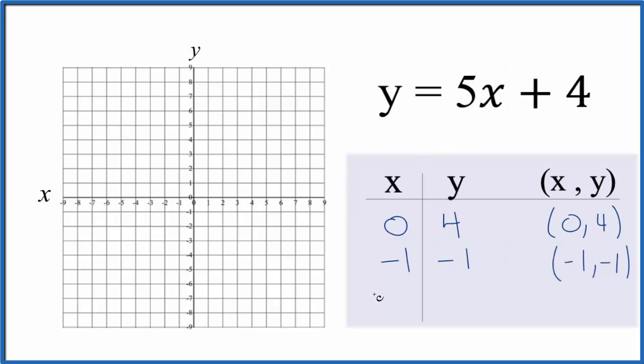And then how about negative 2? 5 times negative 2, that's negative 10, plus 4, negative 6. All these fit on our graph.